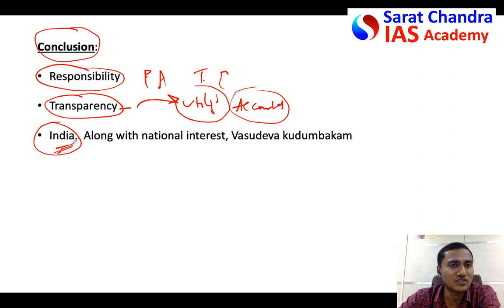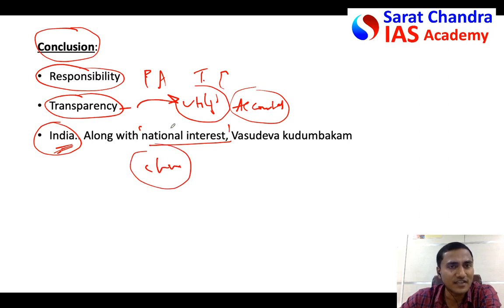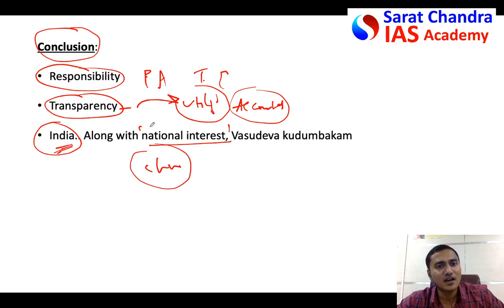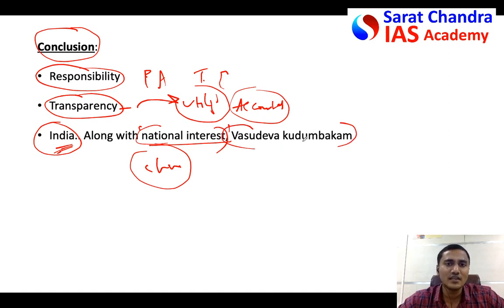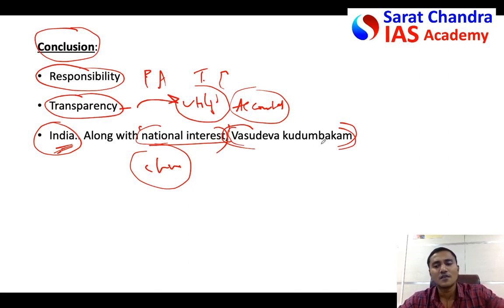Finally, coming to India - India is one of those countries which does not look at just national interest. Some countries like China mostly look into their national interest in international funding. However, India takes it as its responsibility to help underdeveloped countries globally, because we believe in the concept of Vasudeva Kutumbakam - the world is one family. You can write something like this in the conclusion for a better impression.